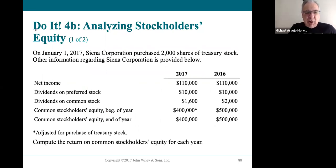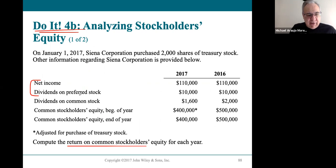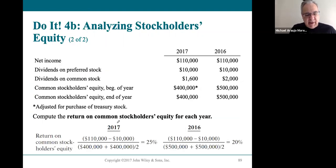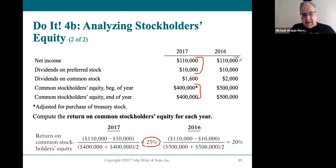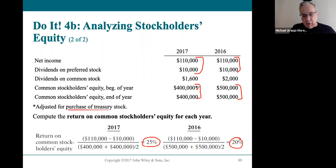You'll have a couple of quick exercises on analysis of stockholders' equity. For return on common stockholders' equity: net income minus dividends on preferred stock, divided by average equity. For 2017, $100,000 income over $400,000 equity is a 25% return. For 2016, $100,000 income over $500,000 equity is a 20% return. When the company purchased treasury stock, it lowered stockholders' equity, which actually helped owners have a higher return.